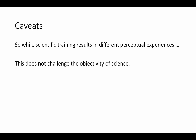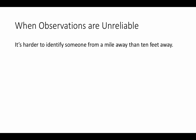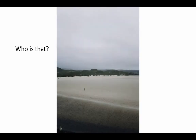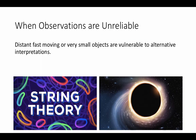Sometimes observations are unreliable — scientists themselves make unreliable observations. But sometimes this is simply because scientists are stretching the limits of what we can observe. It's harder to identify someone from a mile away than from 10 feet away. Distant, fast-moving objects or very small objects are vulnerable to alternative interpretations. It's not obvious when you look far away through telescopes that some features of faraway galaxies are black holes or something else. String theory deals with the very small — are quarks and electrons ultimately like vibrating strings? There are many alternative interpretations consistent with the data we have right now.